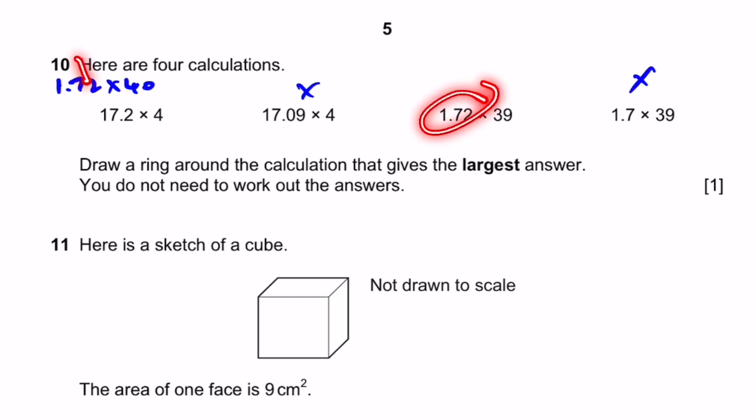And now, this number is the same in these calculations. So, we can compare this one. 40 and 39. 40 is greater than 39. Right? So, multiplying both by 1.72 will not change the sign. This value is greater than this value here. So, the largest answer is going to be this. The first calculation. That's the answer.